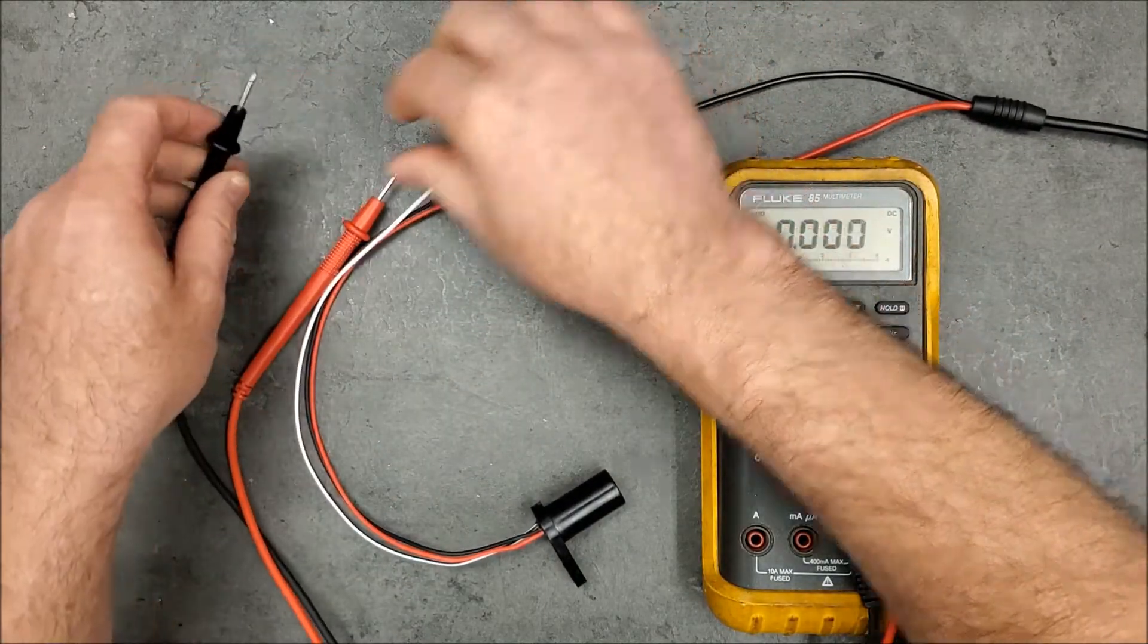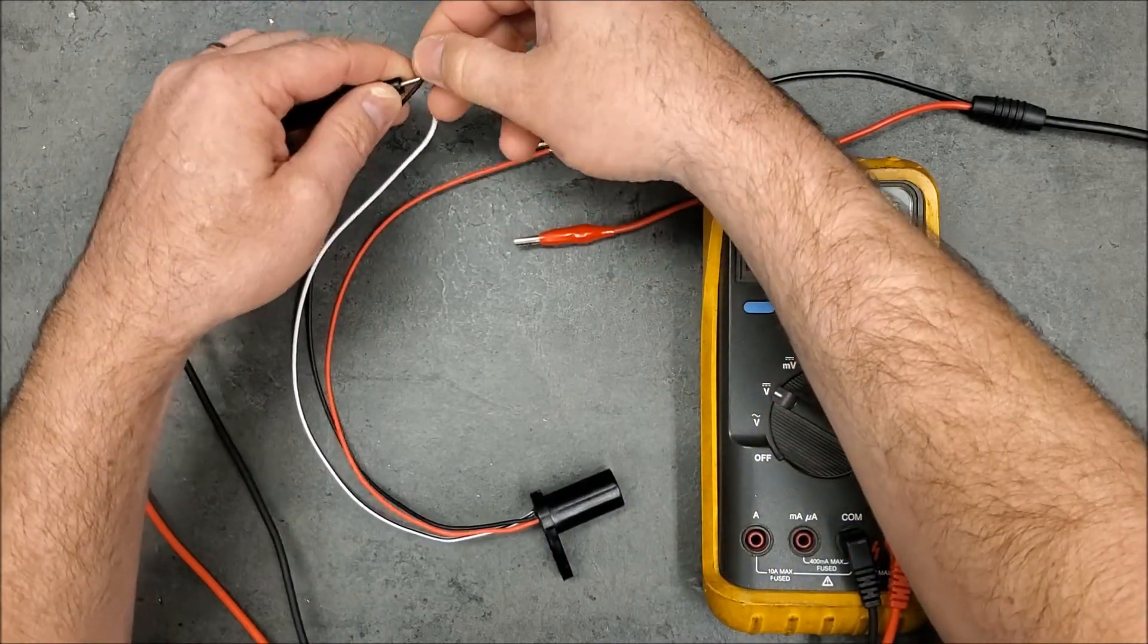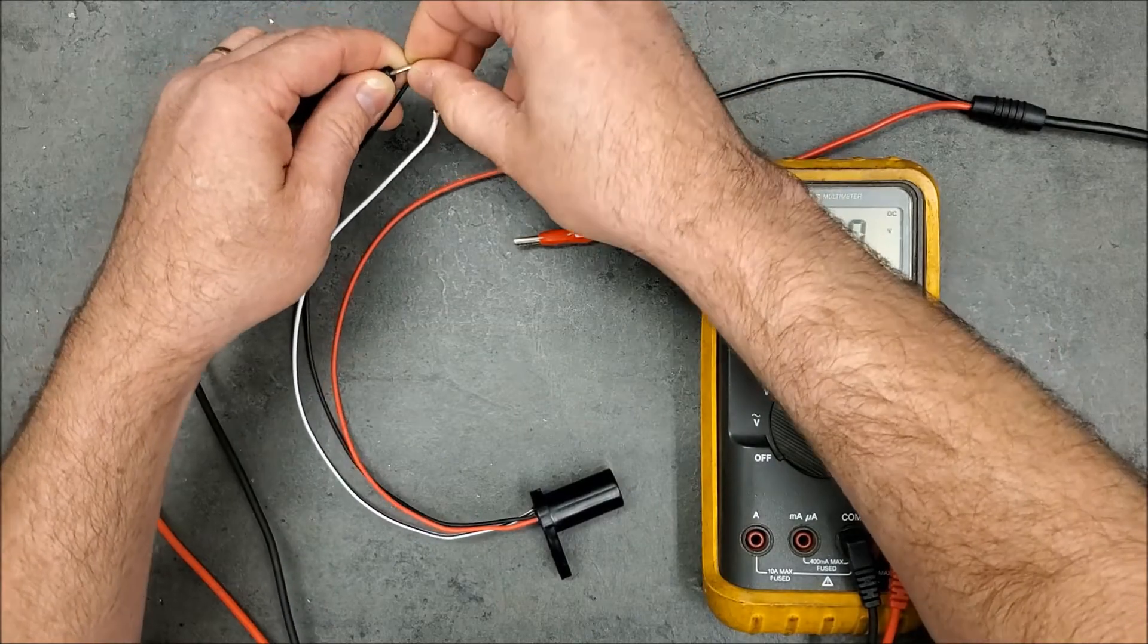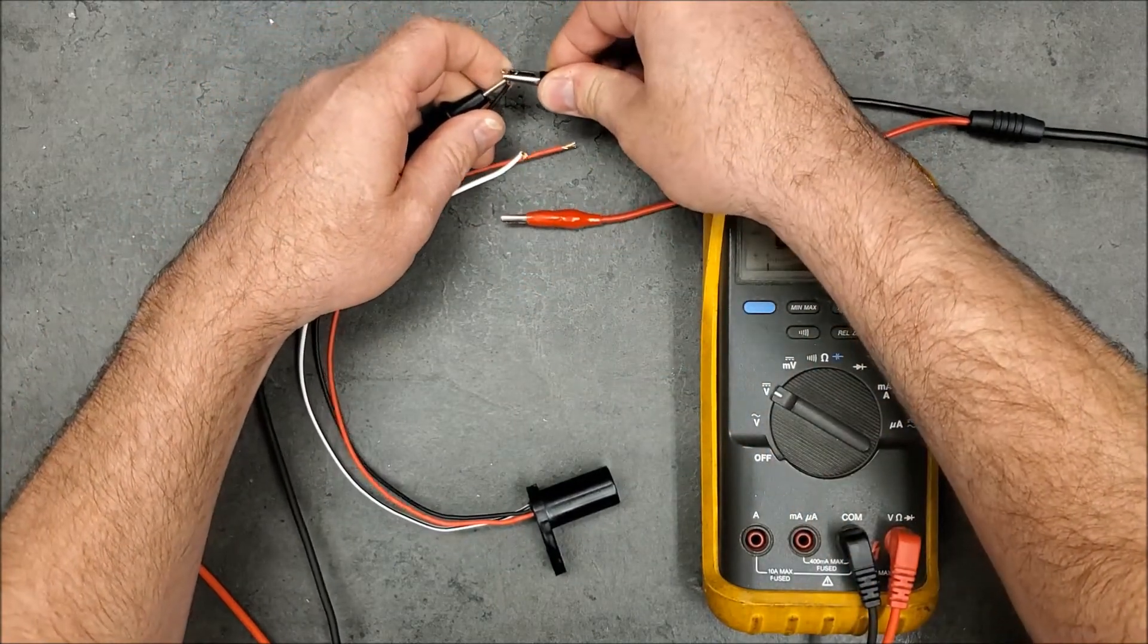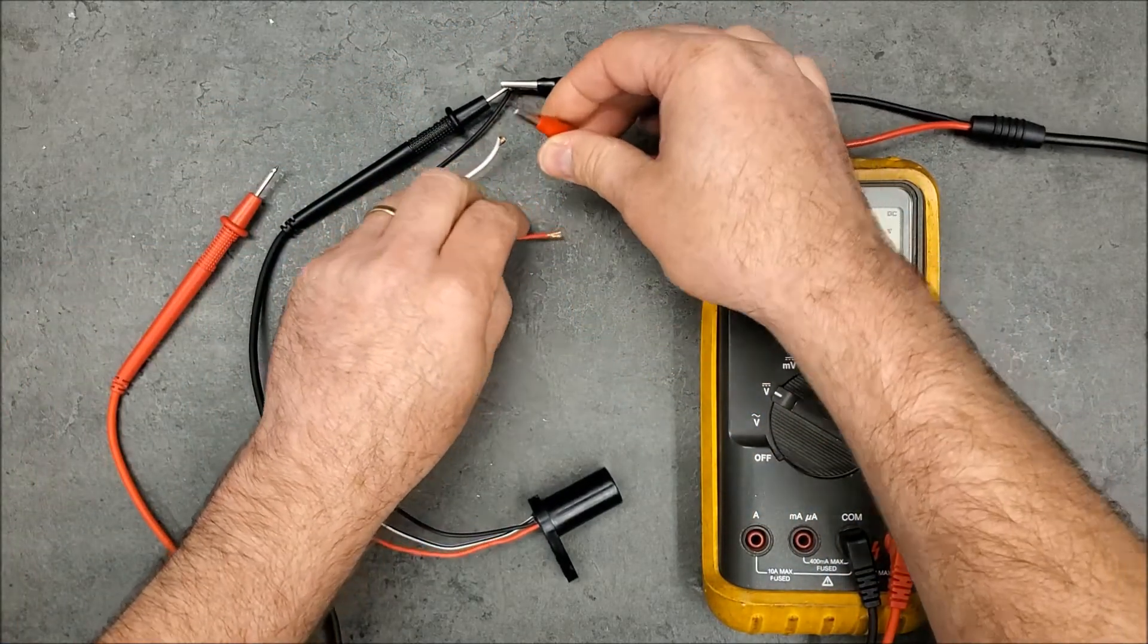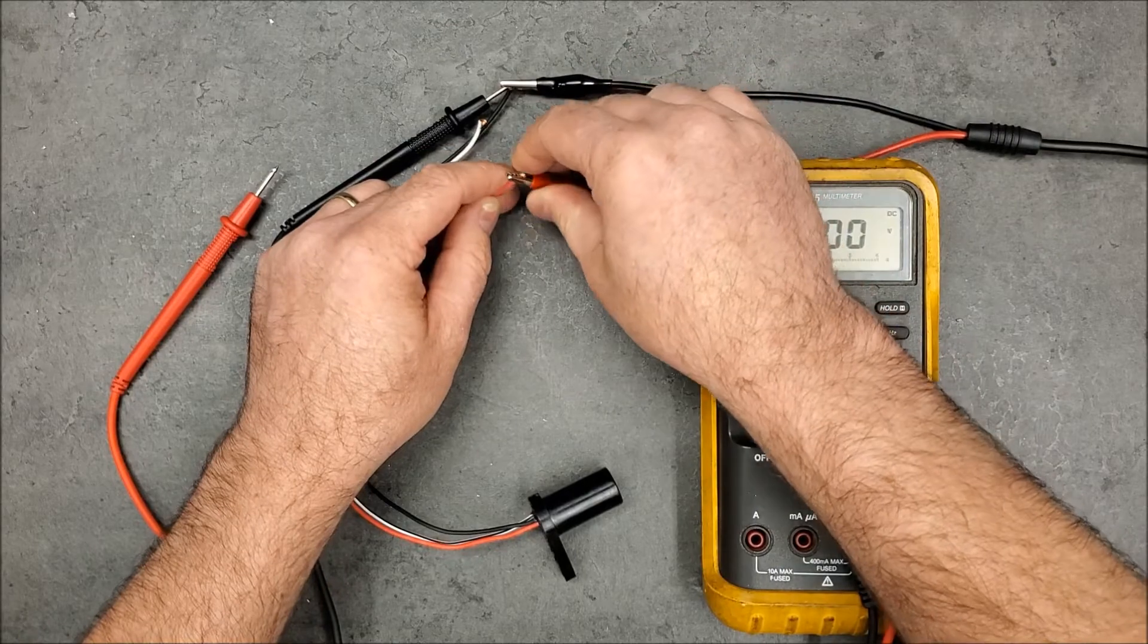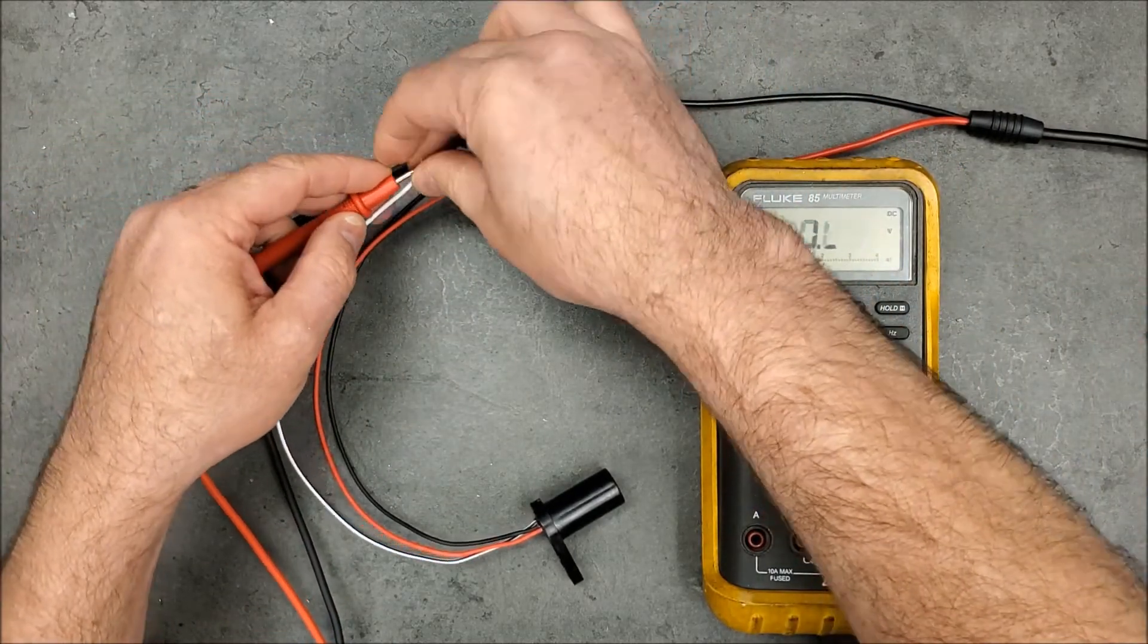Next, we'll take our ground leads and hook our ground up to our Hall sensor. Connect the ground from the power supply, take our 12 volts from our power supply and power the sensor. Then take our positive test lead and put that on the output of the sensor.